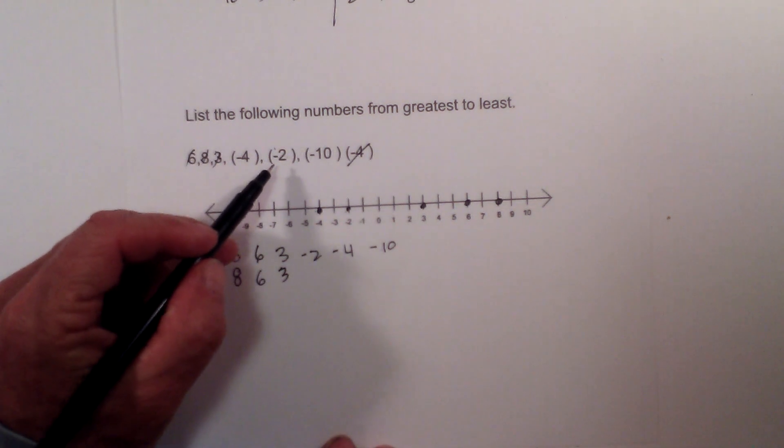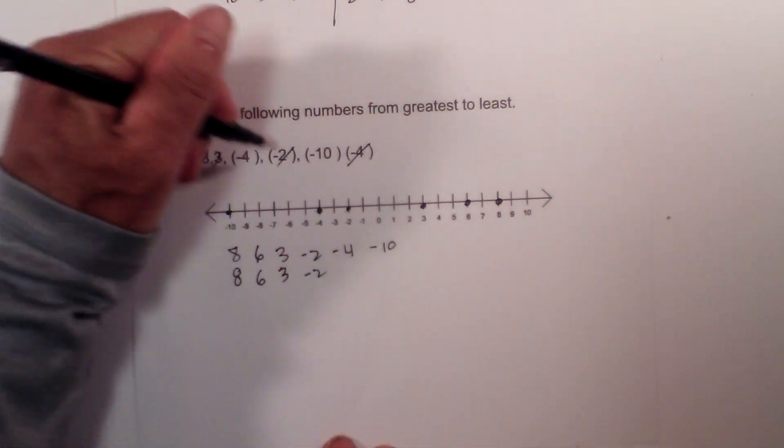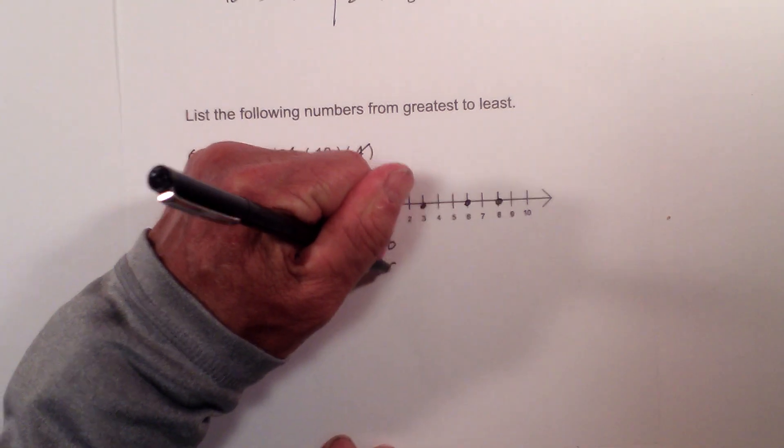Now I'm moving to the negative numbers, and I want the smallest negative number first, which is 2, then negative 4, then negative 10.